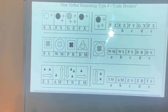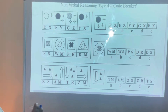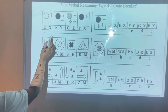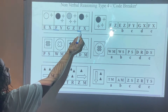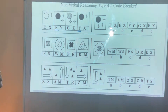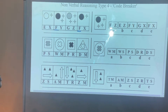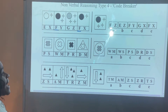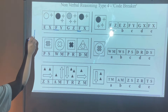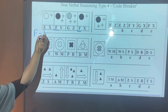I look at the codes which are the same. For instance, on here I have got an F there and an F there. This tells me that those two shapes are similar in some way. When I look at them, they've both got a big circle with them, which means F is a big black circle.